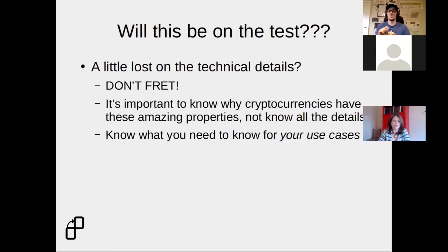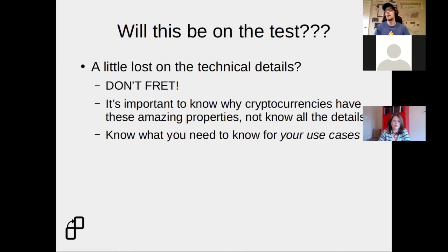Is this going to be on the test? All these blockchains, proof of work, digital signatures — I always like to include this slide after I talk about some technical stuff. If you're a little confused about the technical details, don't fret. It's only important to know a little bit about why cryptocurrencies have these amazing properties. If you just understand there's a special algorithm and mining process that keeps transactions from being reversed, or that it's safe to give out a receiving address and you don't have to exchange private information, you can understand why it's useful and apply those technical properties to your use cases.